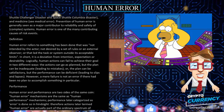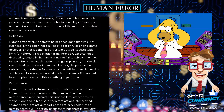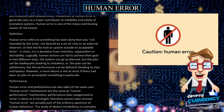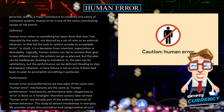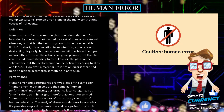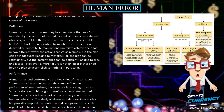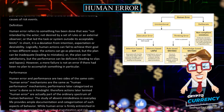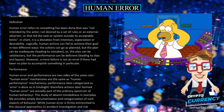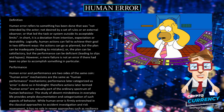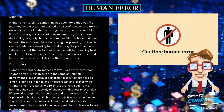Human actions can fail to achieve their goal in two different ways. The actions can go as planned but the plan can be inadequate, leading to mistakes. Or the plan can be satisfactory but the performance can be deficient, leading to slips and lapses. However, a mere failure is not an error if there had been no plan to accomplish something in particular.